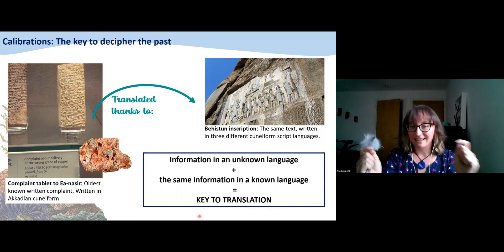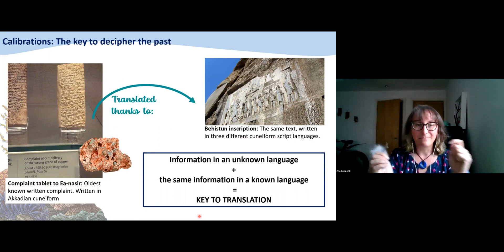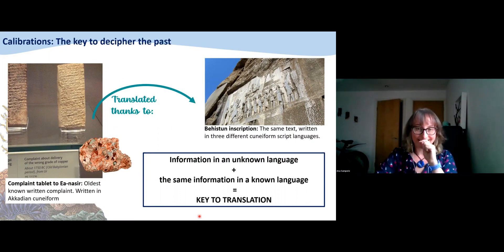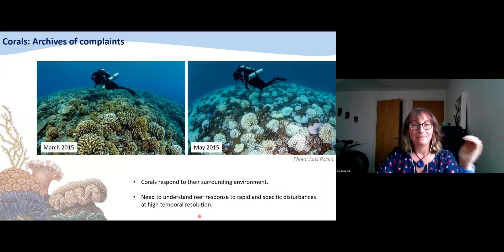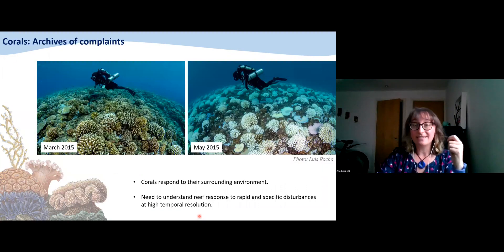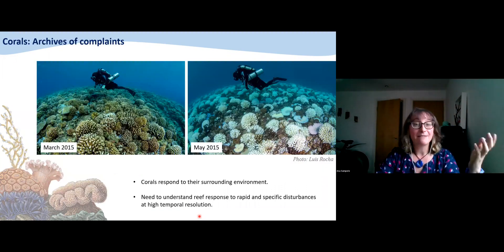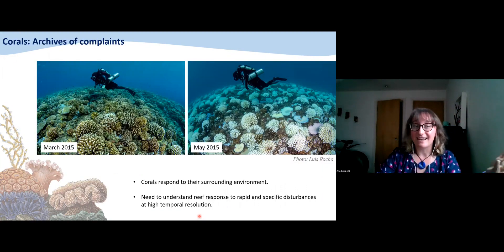So this is a very simple concept, but I would like you to keep this in mind. If we have a piece of information in an unknown language and the same information is in a known language, that's exactly where we have the key to translation. We can calibrate this information and then move forward onto any other archive and translate it into something we can understand. And with this in mind, now we're moving into corals, because corals can be seen as archives of complaints as well.